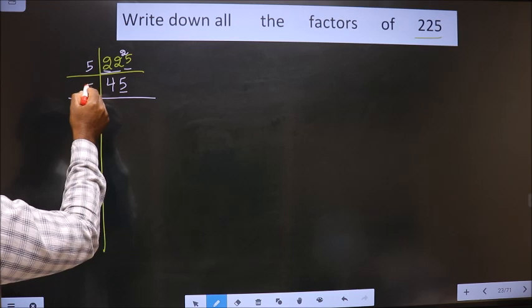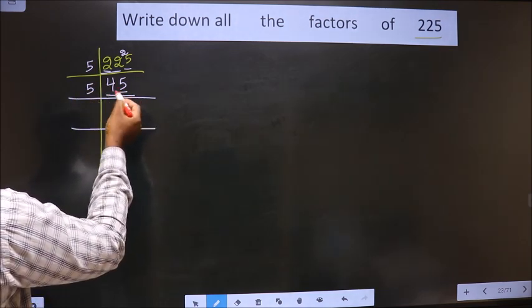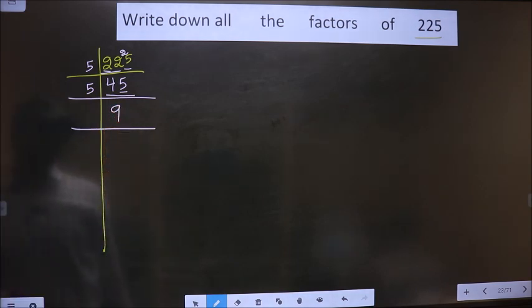Now, for this number, last digit is 5, so we take 5 here. Here, we have 45. When do we get 45 in the 5 table? 5×9 is 45.